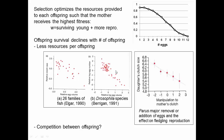Offspring survival declines with the number of offspring in a clutch because they receive fewer resources per offspring. We can see this in other examples: looking at 26 different families of fish, as eggs are larger there are fewer being laid — there's a maximum number of eggs of a certain size that can be produced. Bigger eggs result in higher chance of survival but fewer can be made. Smaller eggs mean more can be produced. The same pattern holds for Drosophila. So we do see this tradeoff in nature.